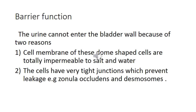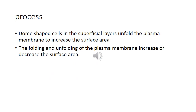The transitional epithelium performs the barrier function — urine cannot enter the bladder wall for two reasons. The cell membrane of the dome-shaped cells is totally impermeable to salt and water. Moreover, these cells have very tight junctions which prevent leakage — specifically zonula occludens and desmosomes. The dome-shaped cells in the superficial layer unfold the plasma membrane to increase the surface area. The folding and unfolding of the plasma membrane increases or decreases the surface area.